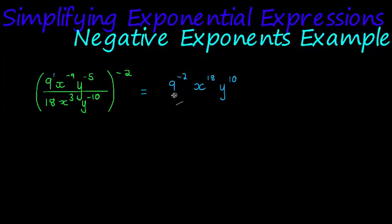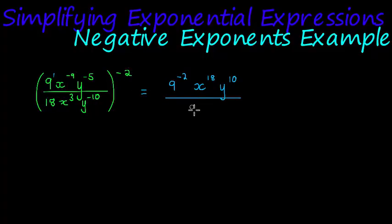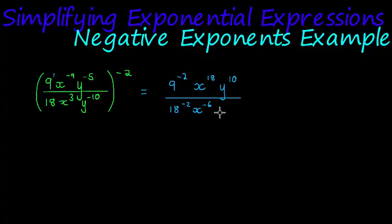Then in the denominator we do something similar. 18 to the power of 1 times negative 2 gives 18 to the power of negative 2. x to the power of 3 becomes x to the power of negative 6 since 3 times negative 2 is negative 6. And y to the power of negative 10 times negative 2 gives y to the power of positive 20.